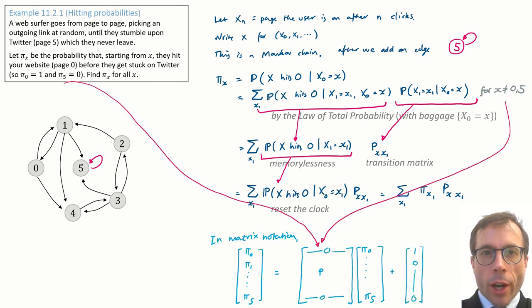Actually, one small correction. The algebra we just did applies to all states x apart from the two we're interested in. We know that pi 0 equals 1 and pi 5 equals 0. We can encode those equalities by tweaking the matrix equation: replace the top row of the matrix by all zeros and the bottom row by all zeros, and say that the left hand side is equal to the modified matrix times pi plus a constant vector. This is just bookkeeping so that we can write out all our equations in a simple matrix form.